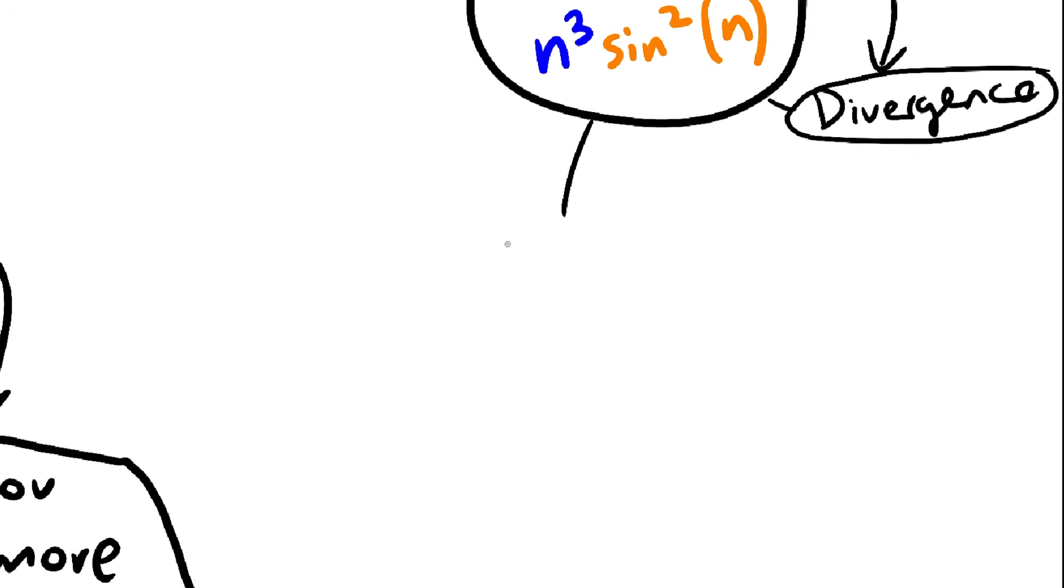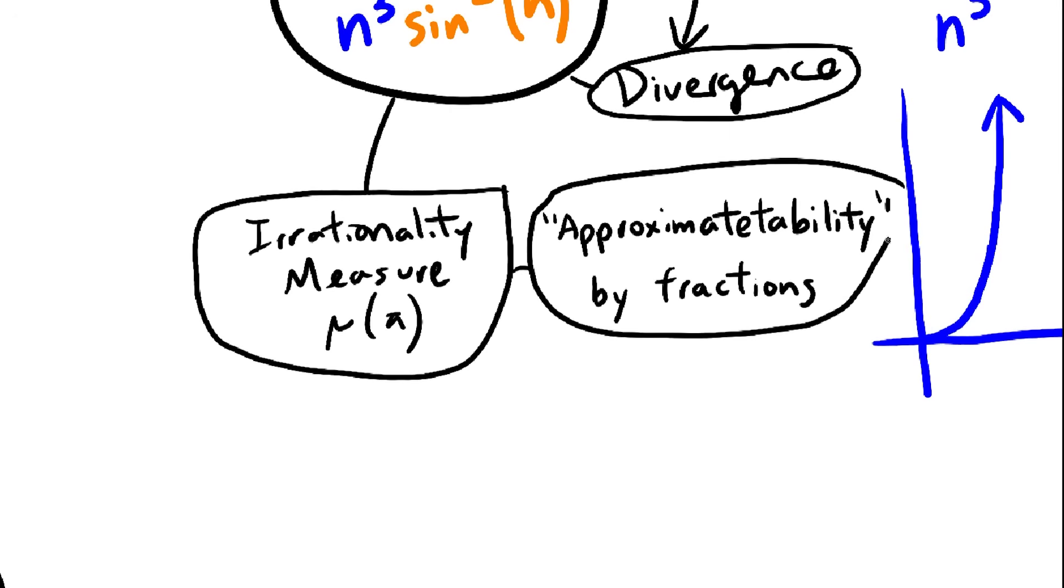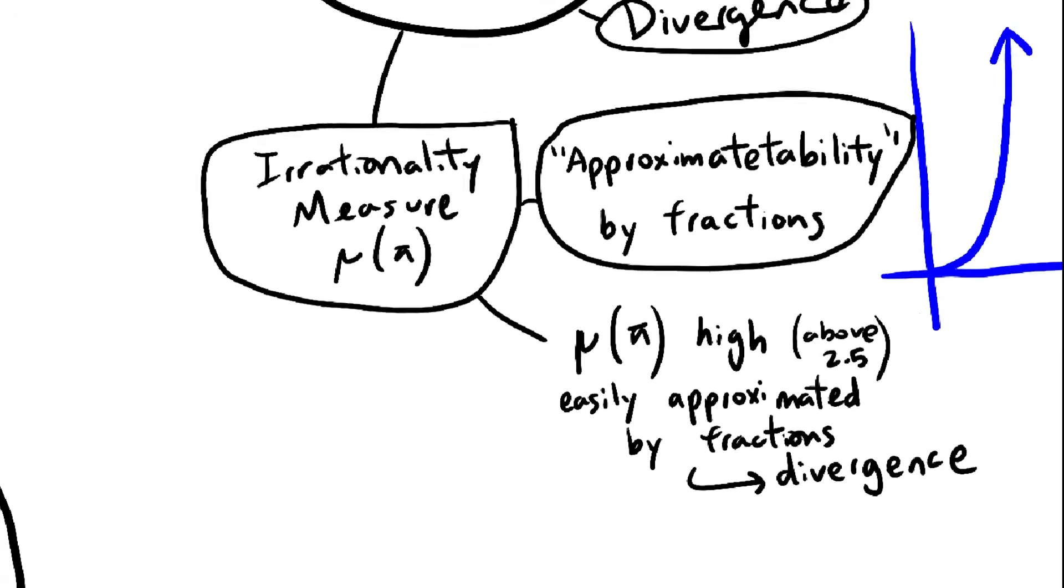Okay, one more thing. There's something called irrationality measure, which basically tells you how easily a number is approximated by fractions. So, if pi has a large irrationality measure, then that means fractions approximate it very well, better than you'd expect.